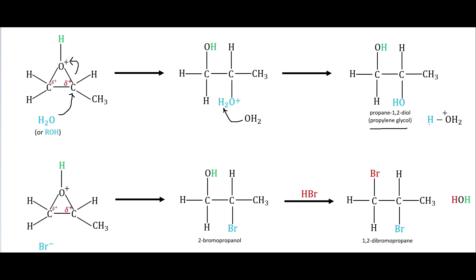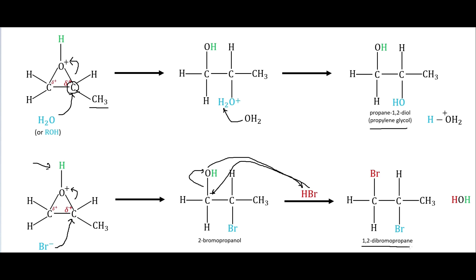Obviously you could do this with other types of hydrocarbon chains as well. This one is nice for showing that the more substituted carbon is going to be the one that gets attacked by the nucleophile. We can also do this where we end up with our protonated epoxide, and then this bromide—maybe we're using hydrobromic acid—comes and attacks that carbon right there. Those electrons go to the oxygen, so we end up with this 2-bromopropanol. Then we could actually protonate this again, and have the bromide come and attack that carbon right there, so we end up with this 1,2-dibromopropane.